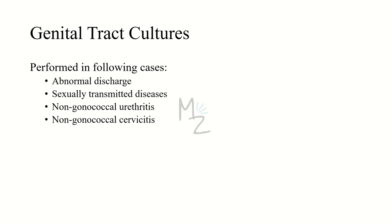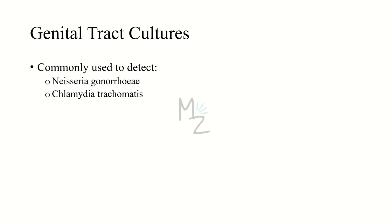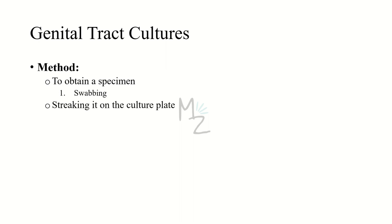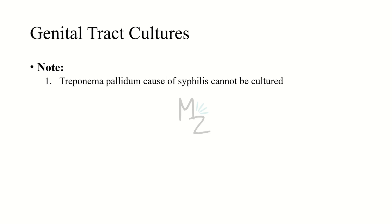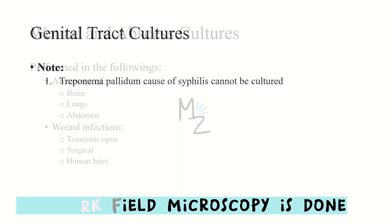Genital tract cultures are performed for abnormal discharge, sexually transmitted diseases, non-gonococcal urethritis, and cervicitis, commonly detecting Neisseria gonorrhoeae and Chlamydia trachomatis. Specimens are obtained by swabbing the urethral canal for men, the cervix for women, and the anal canal for both. For N. gonorrhoeae, Thayer-Martin chocolate agar plate is used; for C. trachomatis, cultures of human cells or yolk sacs of embryonated eggs are used. Treponema pallidum, the agent of syphilis, cannot be cultured — diagnosis is made primarily by serology and sometimes microscopy.